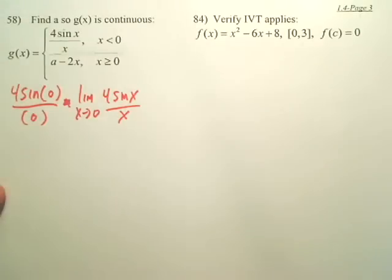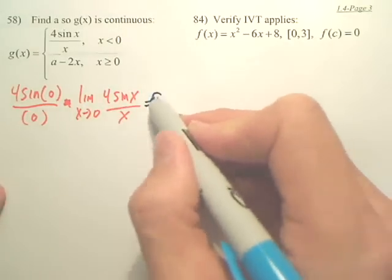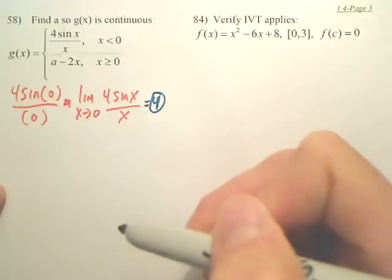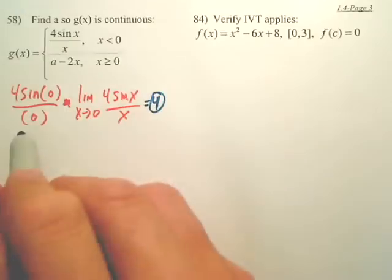Can we do that? Yeah. Kind of tricky, huh? What's that equal? Four. Isn't this one times four? So isn't that four? That's a tricky one. You wouldn't think about taking the limit to actually find that value, because you couldn't actually plug in zero.